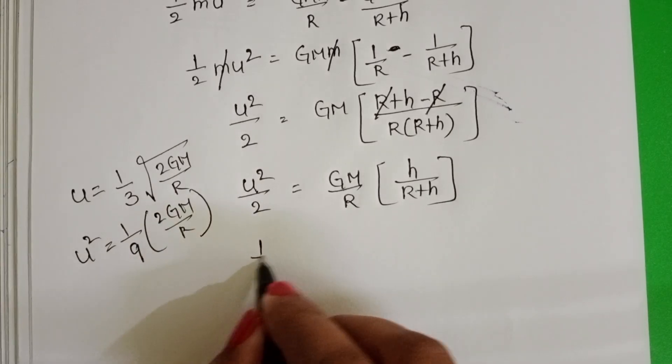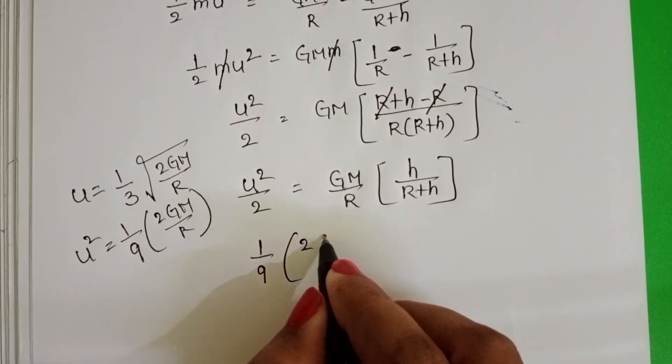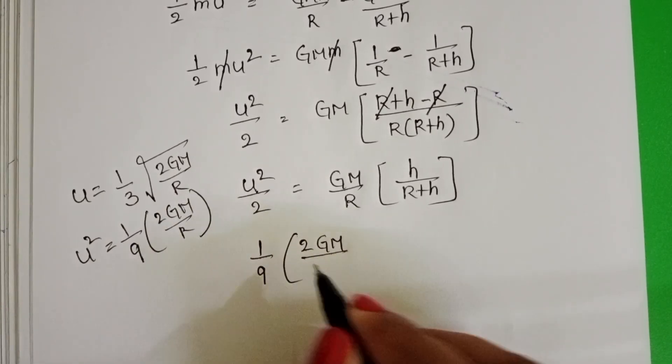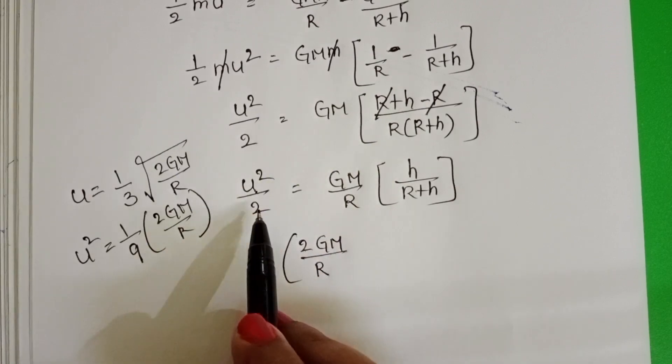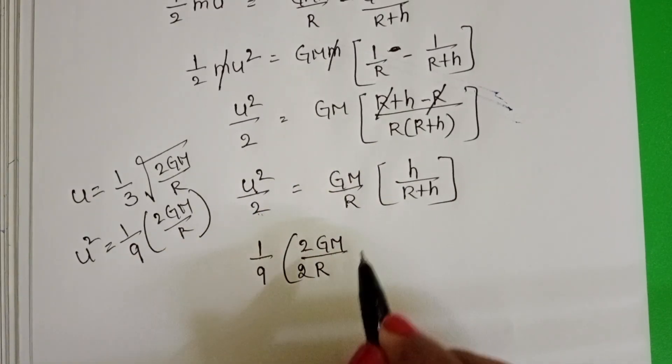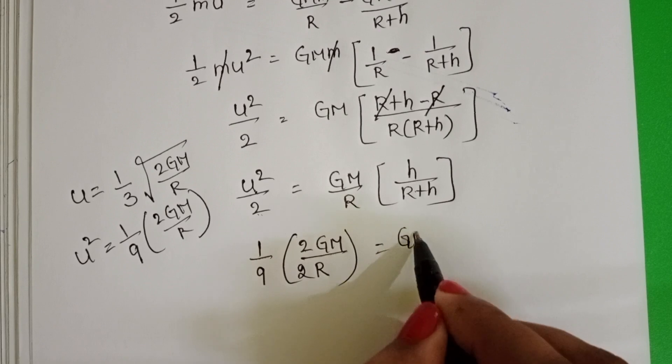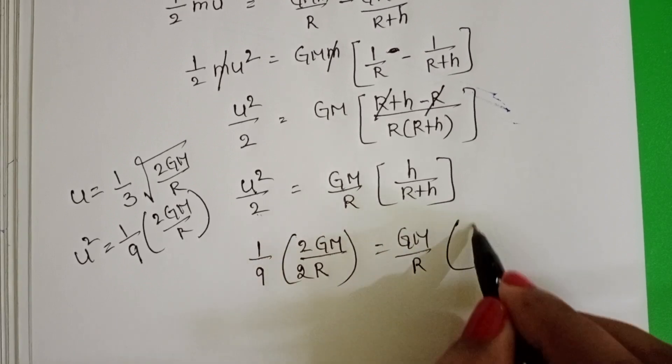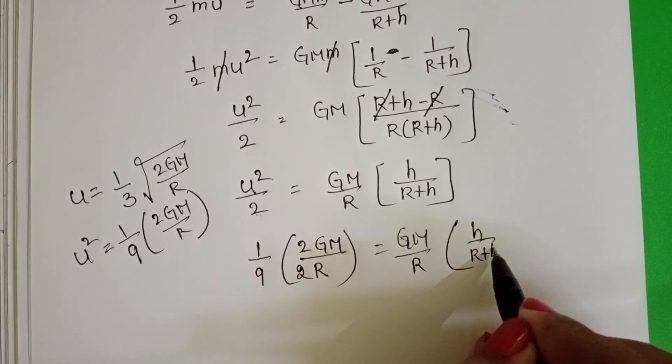1 by 9 into 2GM by R. Here in denominator 2 is there. GM by R into h by R plus h.